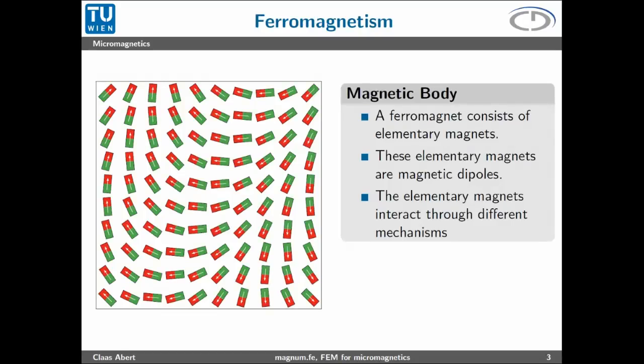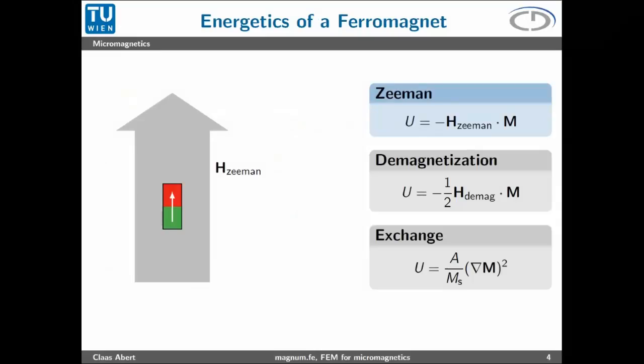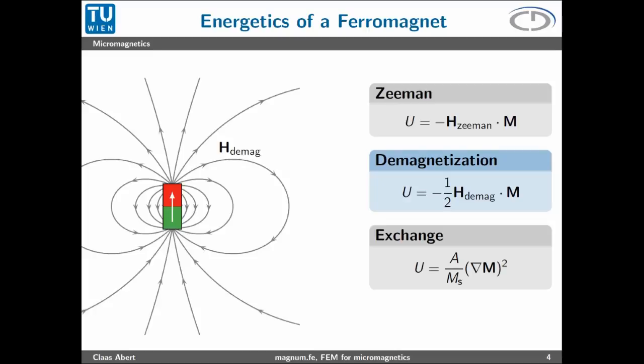A ferromagnet basically consists of a large number of elementary magnets, each a magnetic dipole, and these dipoles interact with each other through different mechanisms. One mechanism is the simple interaction with an external field which we call Zeeman field, where the elementary magnet tries to align in parallel to this external field. The next contribution is the demagnetization field, also called stray field or magnetostatic field. Every elementary magnet not only reacts to external fields but also generates fields.